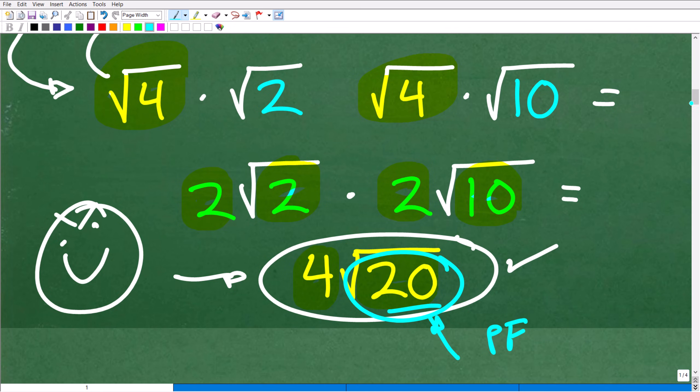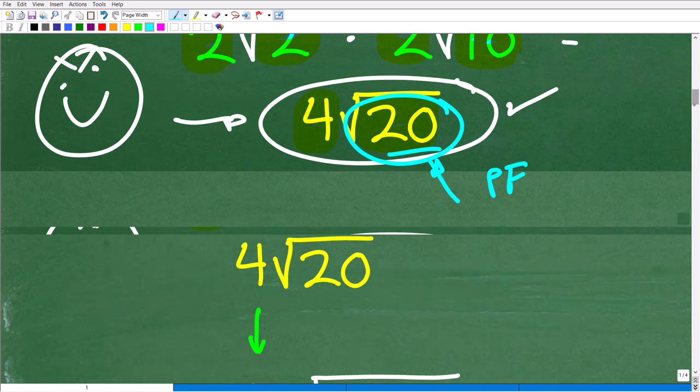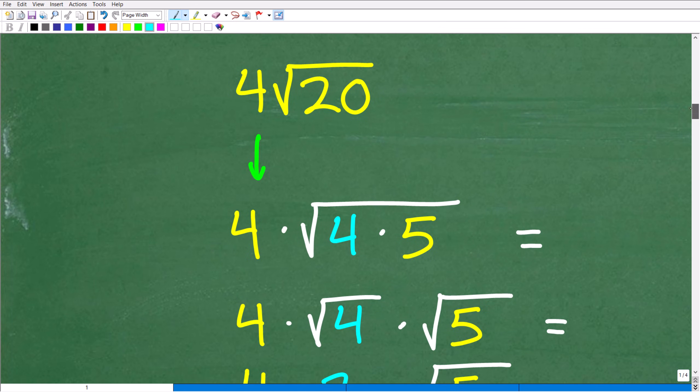But here, indeed, we do have another perfect square factor. So here is our situation, 4 square root of 20. So obviously that's 4. Square root of 20, again, we can write as the square root of 4 times 5. That is, of course, 20. And we're looking for those perfect square factors. And we have one there, 4.